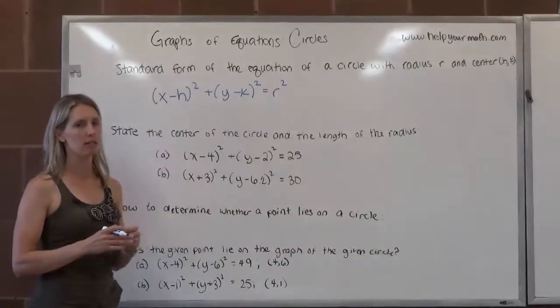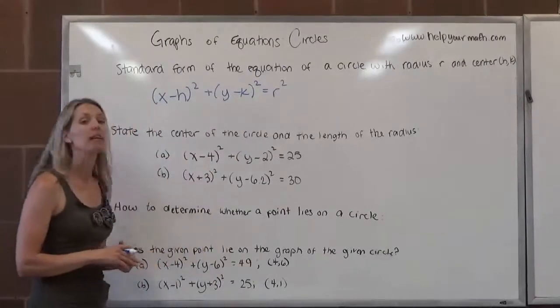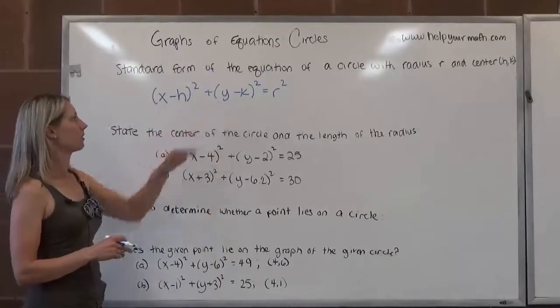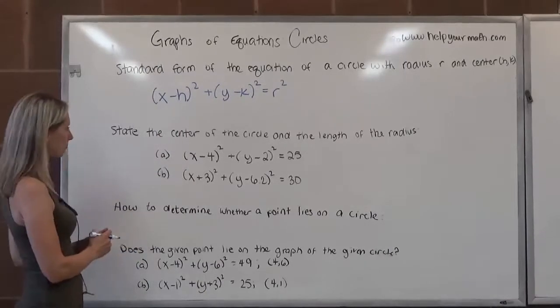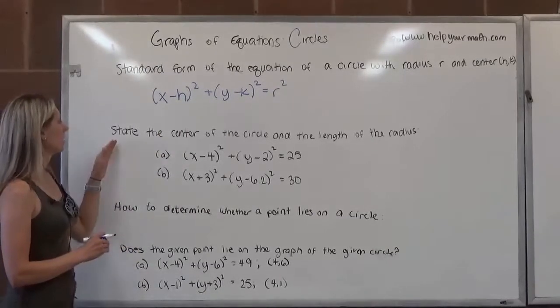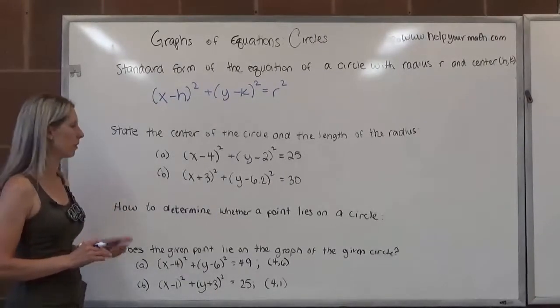So again, (h, k) is the coordinates of the center of the circle, and r is the radius. x and y are any coordinates of a point that lie on the circle. Okay, so here we want to state the center of the circle and the length of the radius when we're given the equations in standard form.